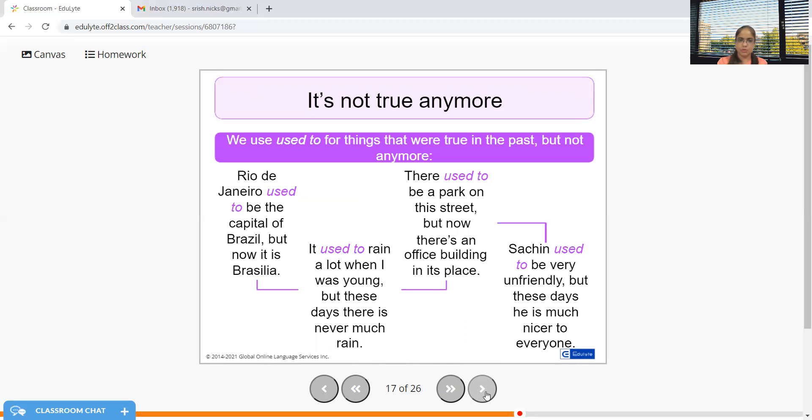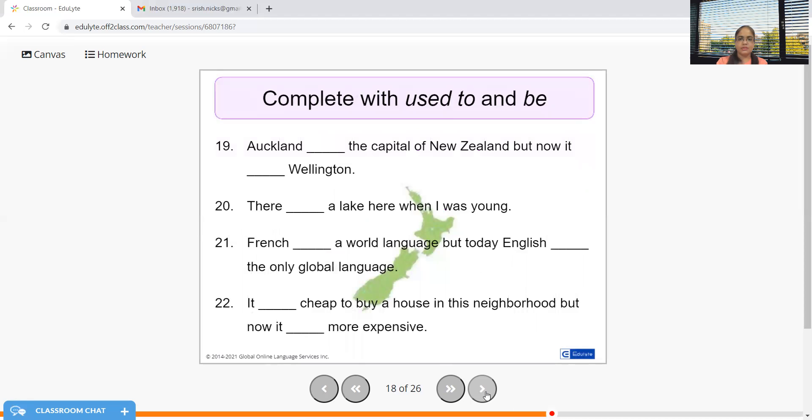Something which is now not in existence. Auckland was the capital - or Auckland used to be the capital of New Zealand but now it is Wellington. There used to be a lake when I was young.